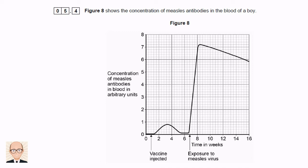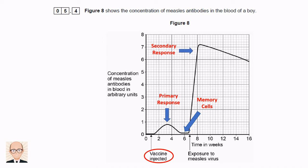The vaccine was given on day one and by day three the number of antibodies had risen — this is called the primary response. The number of antibodies then drops, but crucially not back to zero; these are produced by the memory cells. Then on day seven the patient was exposed to the real live measles virus, and the secondary response is enormous — many more antibodies produced the second time. The measles virus doesn't stand a chance; it's quickly destroyed before we even know we had it. This is called artificial immunity.